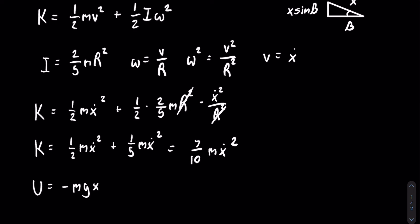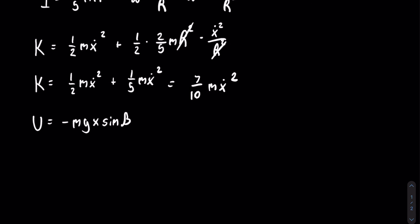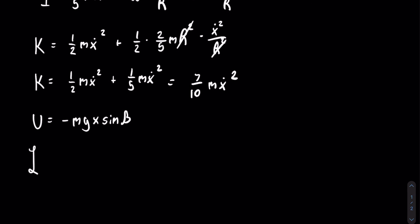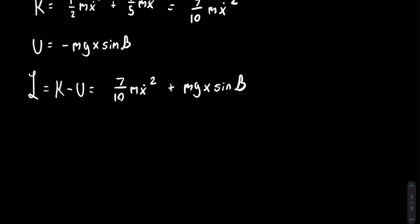So we can take the gravitational potential energy from the top, and we get that it is equal to negative mg x sine of beta. Now we can write out our whole Lagrangian, which is equal to the difference in kinetic and potential energies, which in this case equals seven-tenths m x dot squared plus mg x sine of beta. And now we can start taking derivatives.